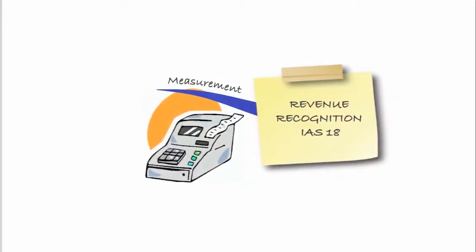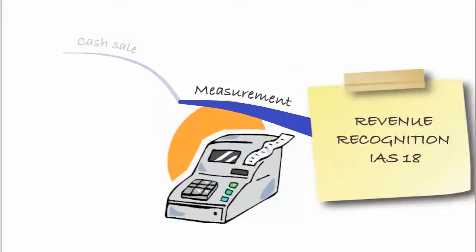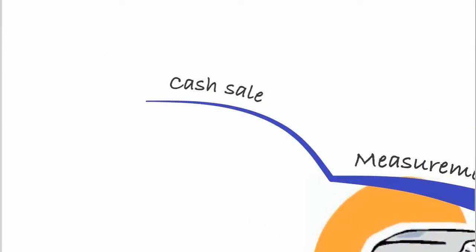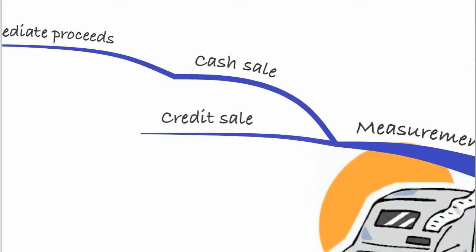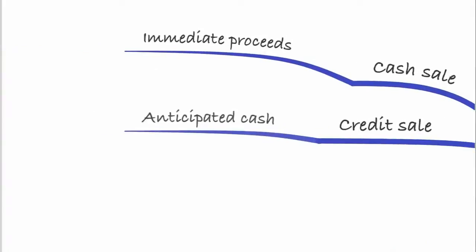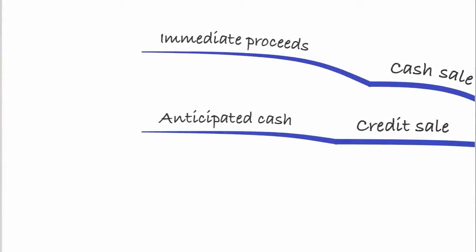So first of all, measurement — how much revenue should we recognise? For a cash sale, we recognise the immediate proceeds because we sold something for cash and received cash. If it's a credit sale, we simply recognise the anticipated cash.